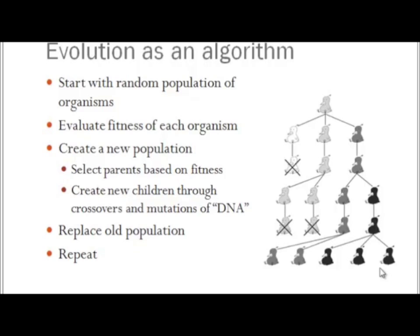We start with a random population of organisms. Each organism is a potential solution to our problem. We encode that in DNA, DNA in quotation marks. We come up with a mathematical representation that is an effective chromosome. Then we evaluate the fitness of each organism against that fitness metric. Create a new population with parents, stochastically, based on their fitness. Create new children through crossovers and mutation of that DNA, and replace the old population in repeat. And this is an effective optimization algorithm.